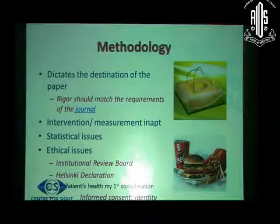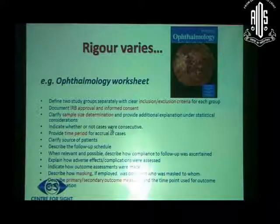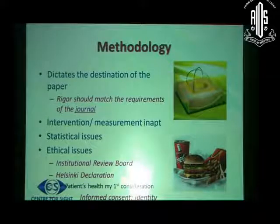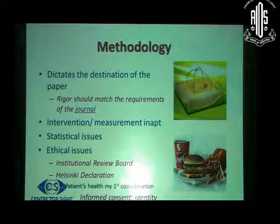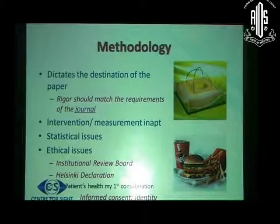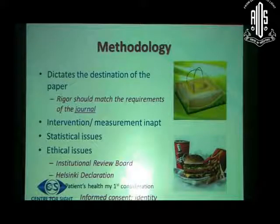Methodology is the thing which dictates the actual destination of the paper. The top-ranked journals have the most rigorous requirements from the methodology, as you can see from the worksheet of the Ophthalmology Journal — it is so detailed that it is impossible to write a substandard paper. Sometimes our intervention or measurements are not suitable to the aim we are targeting, and frequently there are statistical issues. A lot of journals advise authors, especially of the largest studies, to consult a professional statistician. Finally, there can be ethical issues like not taking approval of the institutional review board, not being compliant with the Helsinki declaration, or not taking informed consent.